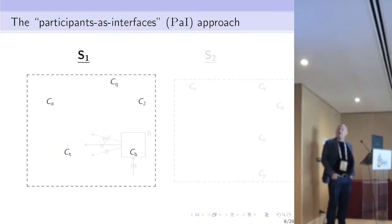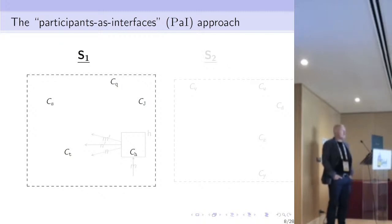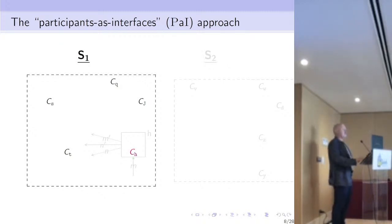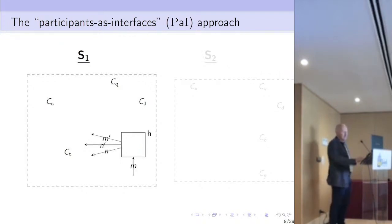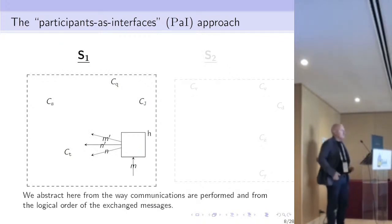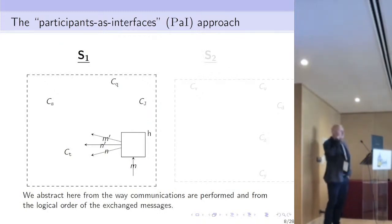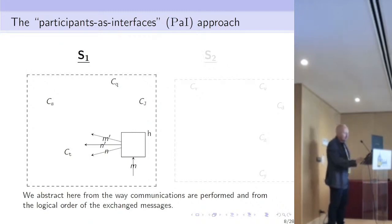Let us assume we have a system S1 composed of several participants, and we pick one of them, H, which has a certain behavior. In this discussion I abstract from the way communications are performed and from the logical order of the exchanged messages. H does something, gets some message M, and is able to send messages M-prime and M-double-prime, and so on.